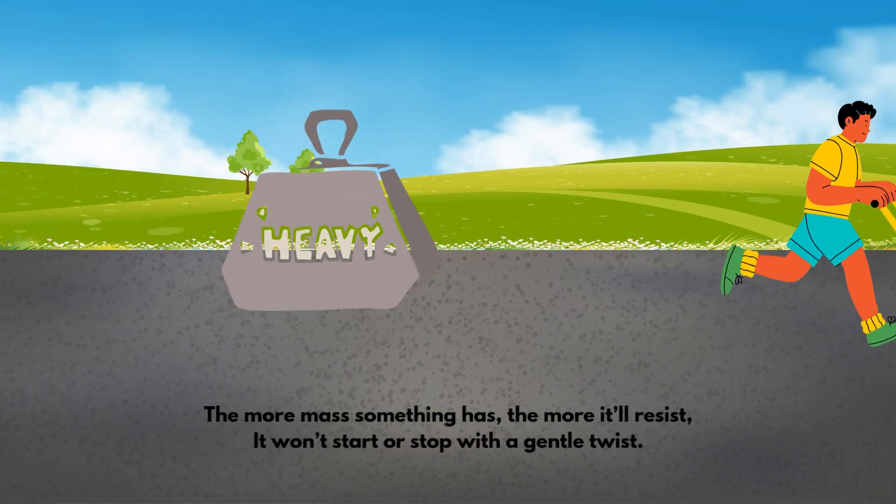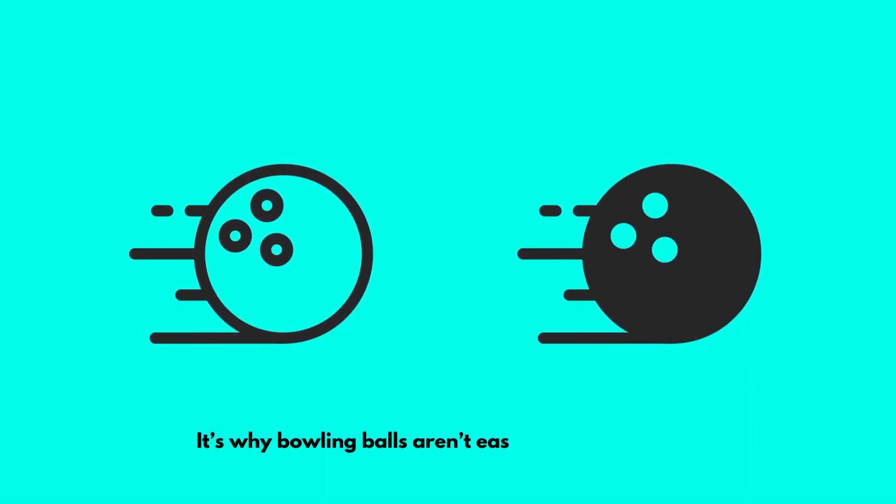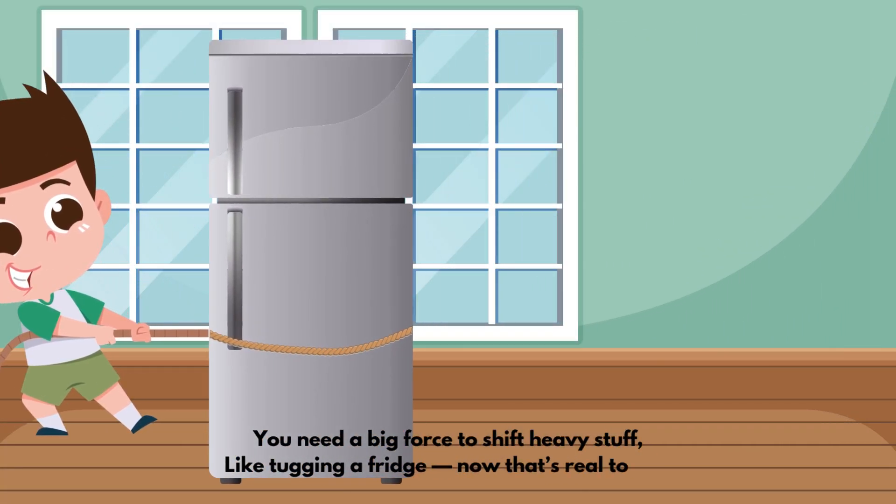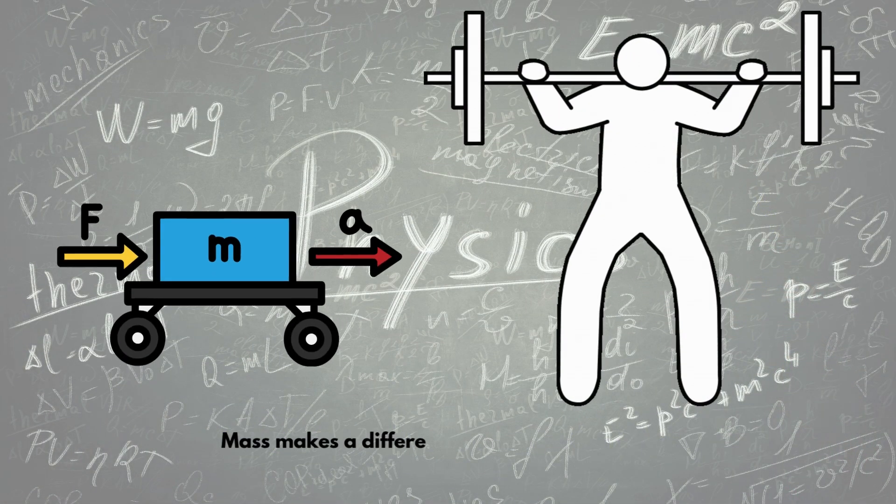It's harder to start or stop with a gentle push. That's inertia, a cool science rule. It's like bowling balls aren't easy to move in school. You need a big force to shift heavy stuff, like tugging a fridge. Now that's real tough. But light things, a breeze can send them flying. Mass makes a difference, there's no denying.